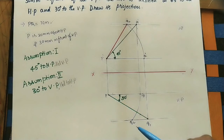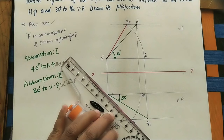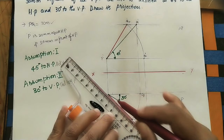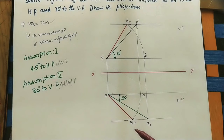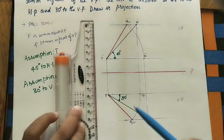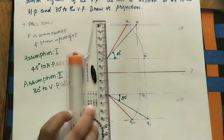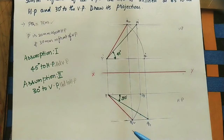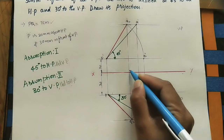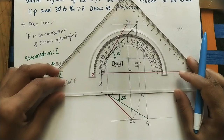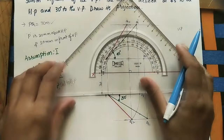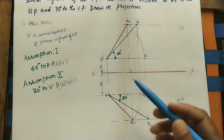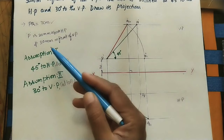For the final top view, take the length PQ1 using the compass and swing an arc to cut the locus line in the top view — this intersection is Q2. Join P and Q2 — this is the final top view. To verify, check that Q2' and Q2 lie on the same projector line perpendicular to XY. Use a protractor to check whether the projector line makes 90 degrees with XY. If it is 90 degrees, the answer is correct.